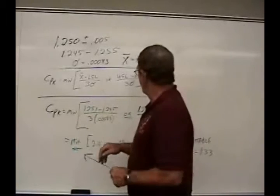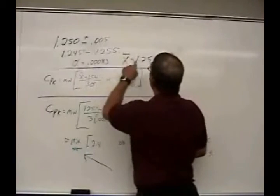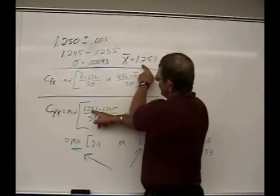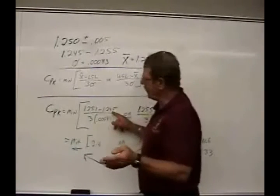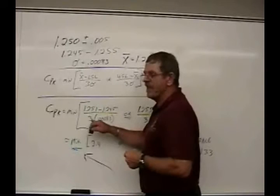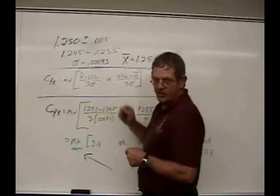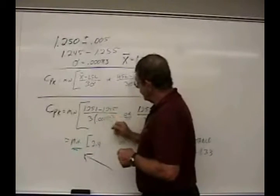So when you do the math, you'll see that we have the X bar, 1.251, minus the lower spec limit, which is 1.245, divided by 3 times the standard deviation, and you do the math, you get 2.4.